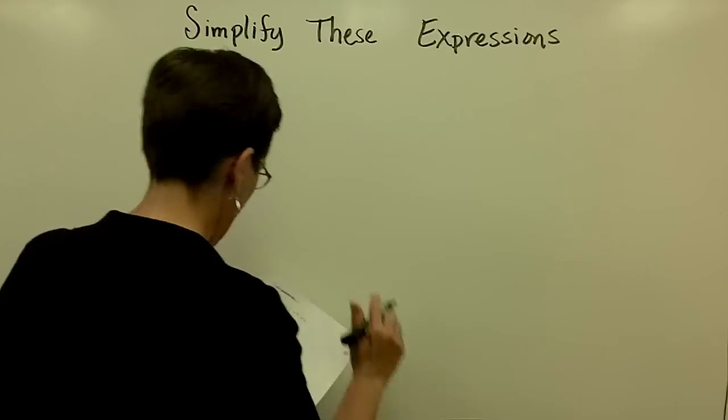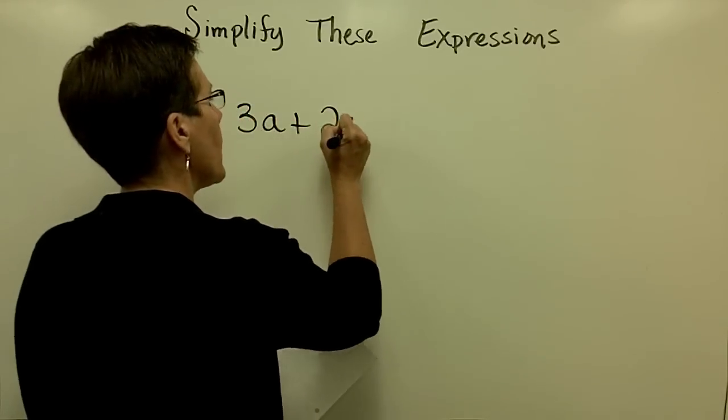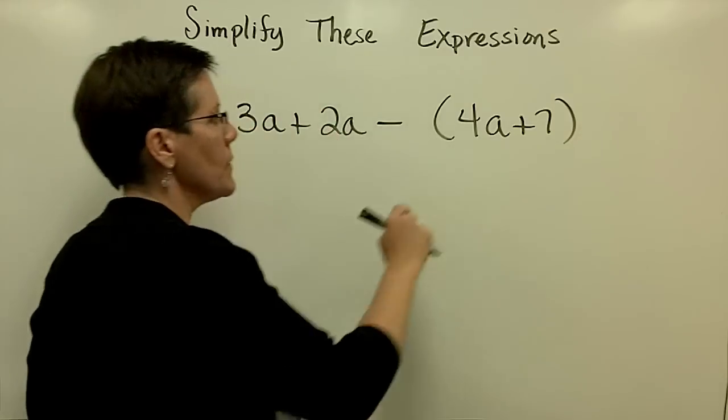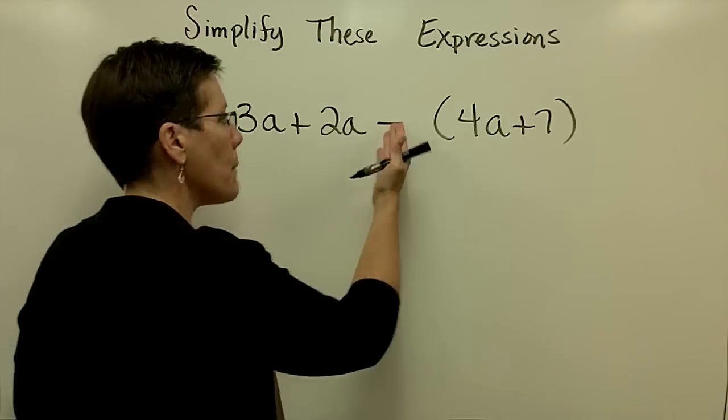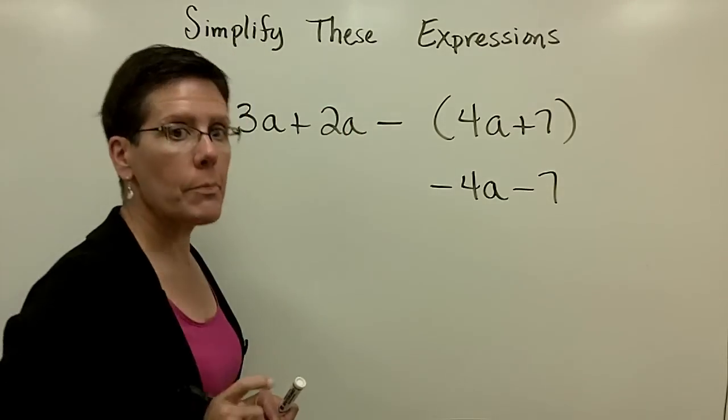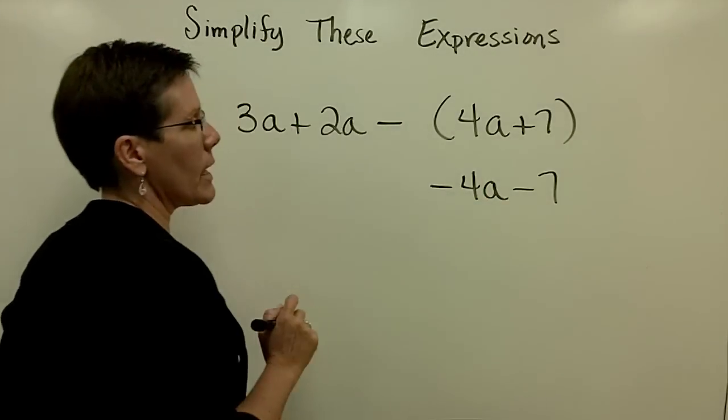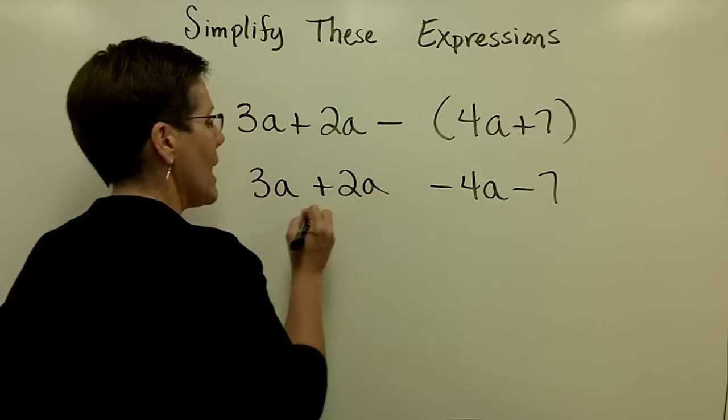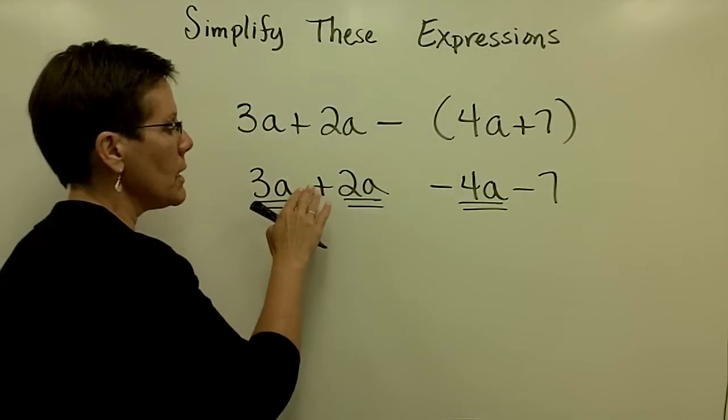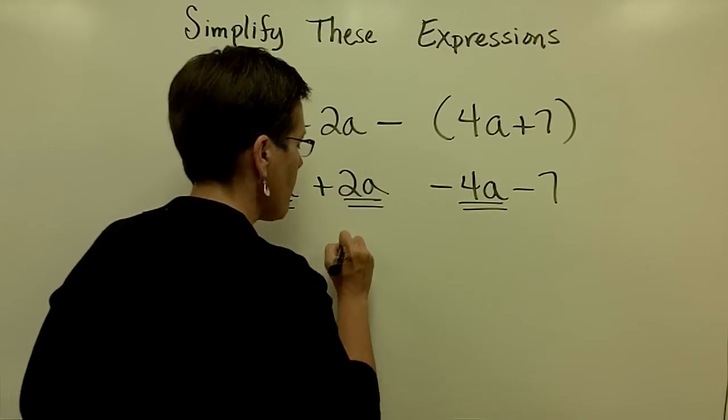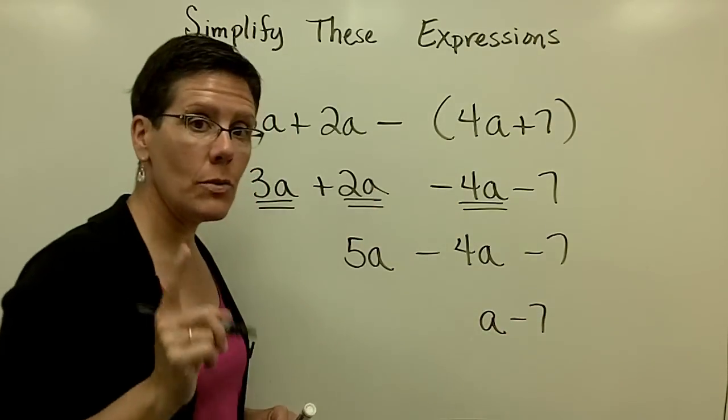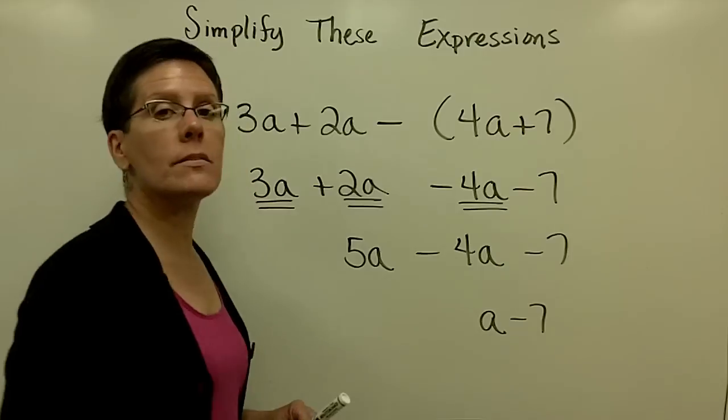Let's look at another. So 3a plus 2a minus 4a plus 7. So I'm asking you to subtract all of that. I'm asking you to think of giving me the opposite of all of that. So that would be a minus 4a and a minus 7 and drop your parentheses now. You've distributed that negative 1 through those. And now bring down your other terms and collect everything that is like working from left to right. So 3a plus 2a is 5a. And when I subtract 4a, I'll get a 1a. I won't write that in front, but you can. And my final answer to that problem is a minus 7.